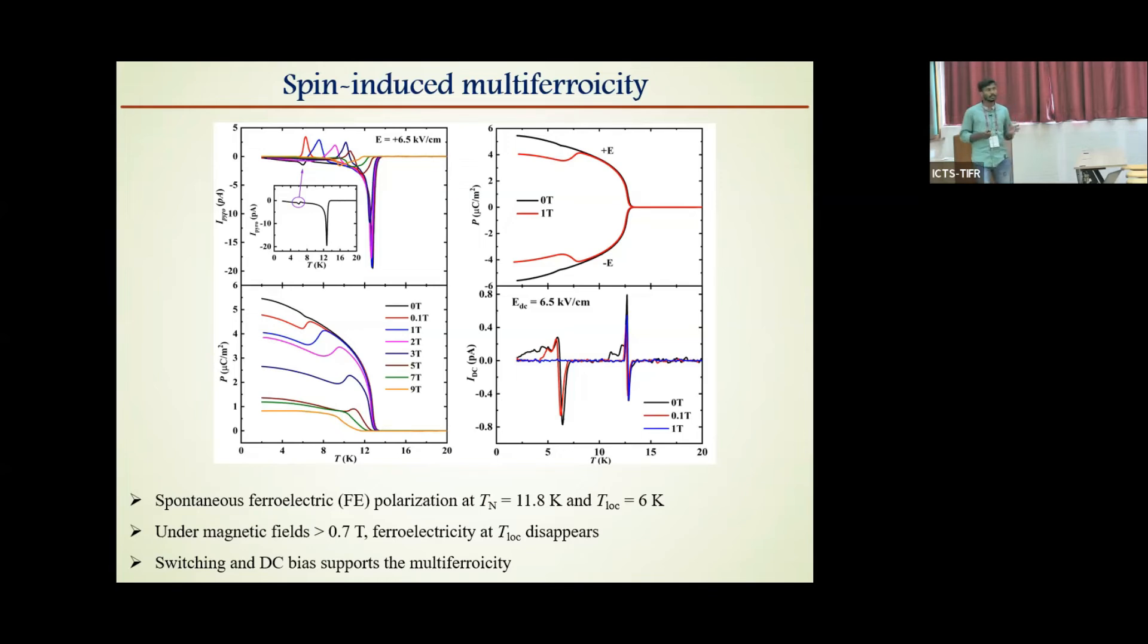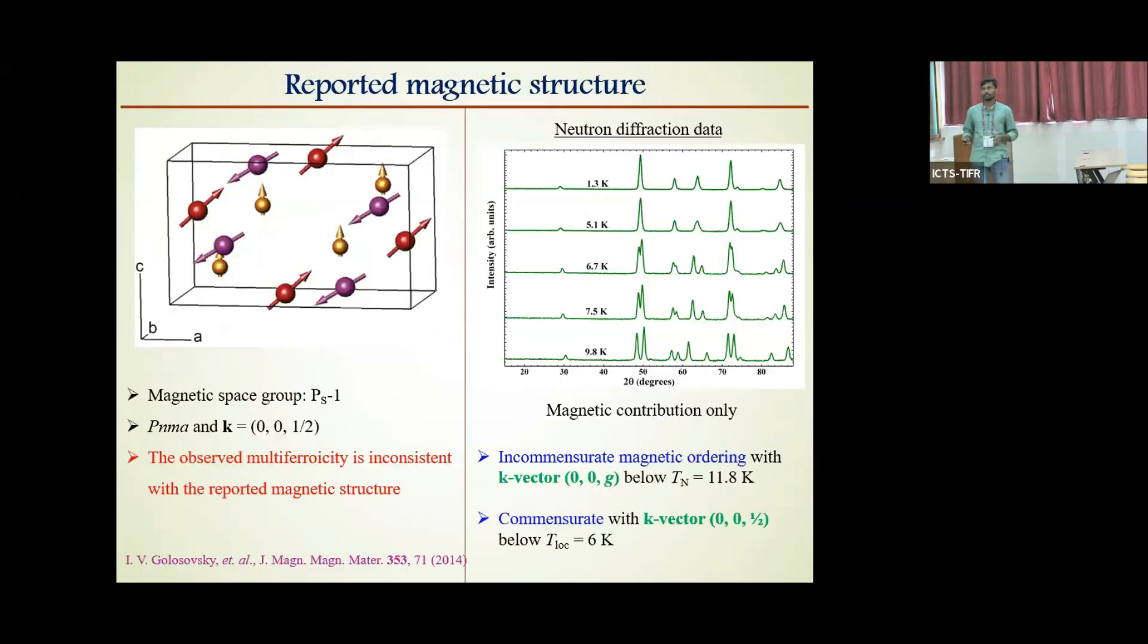However, to understand the origin of multiferroicity, we need to know the magnetic structure of this compound. When we look at the literature, the magnetic structure of this compound is reported. But however, it is reported to be P1 bar, which is centrosymmetric, and which means it does not allow multiferroicity. But our experimental results suggest that it is multiferroic. So we have contacted the authors of this paper, and thanks to them, they have agreed to share the neutron data for reanalysis.